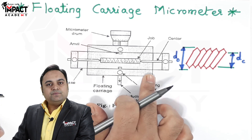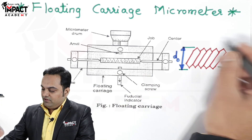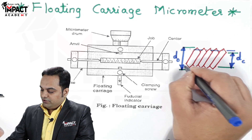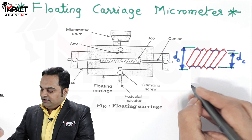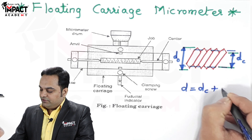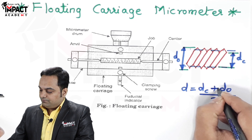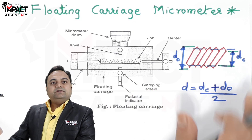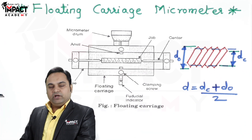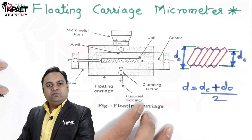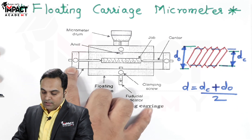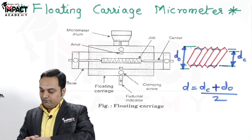DC and DO can be measured for a given screw using the floating carriage micrometer. We can also measure the main diameter, which is the average of DC and DO. These diameters can all be measured with the help of the floating carriage micrometer. Here is the top view of the arrangement.